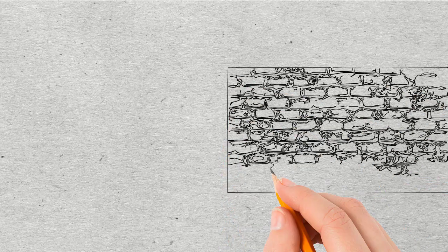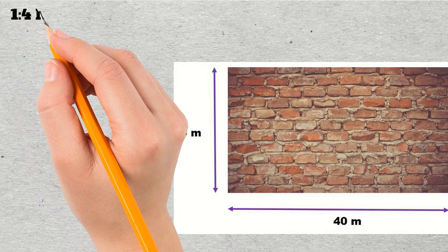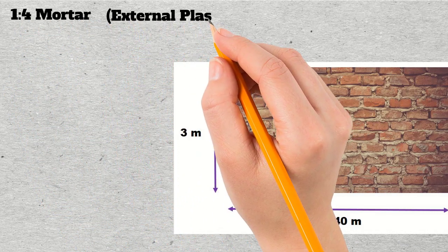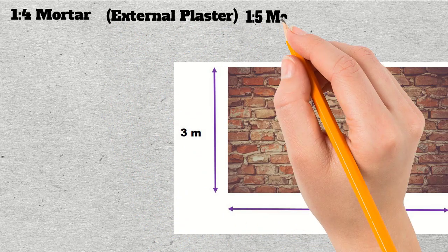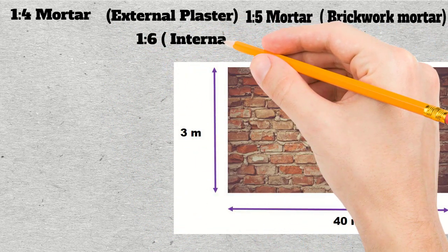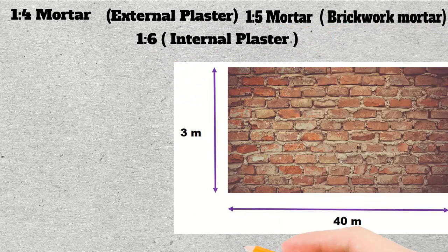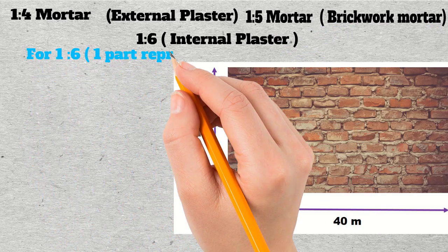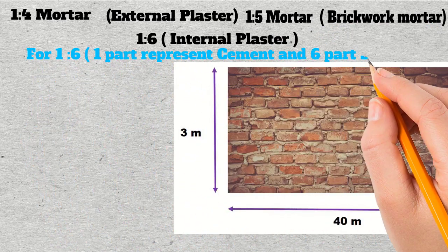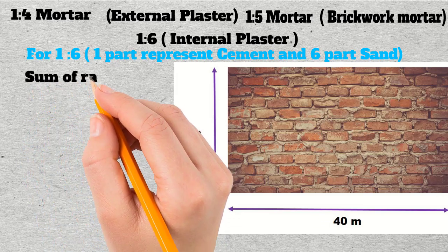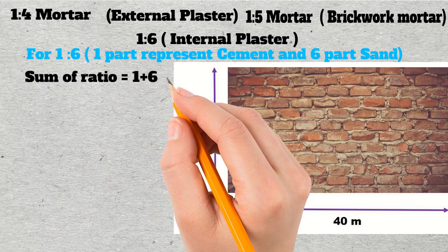For the mortar, different ratios are recommended. 1:4 mortar is generally recommended for external plaster and ceiling plaster, 1:5 for brickwork mortar and internal plaster, and 1:6 for internal plaster. Let's try the last ratio, that is 1:6. For 1:6, 1 part represents cement and 6 parts represent sand. First, we need to find out the sum of the ratio, that is 1 plus 6 equals 7.